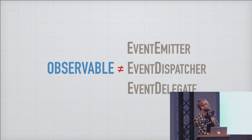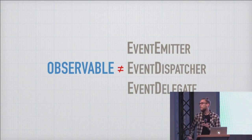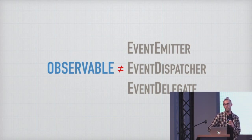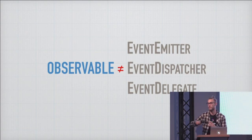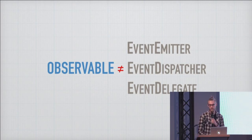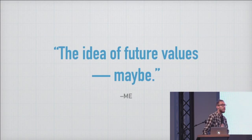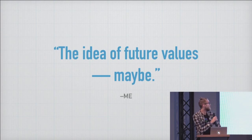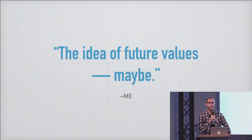That's the biggest hurdle learning Rx — we all know reactive programming, we all use event handlers and get callbacks later, but nothing is Rx. All of these guys are essentially the same thing: they're an array of callbacks. You can call a function that will iterate over the array and call all those callbacks with the same piece of data. An observable, in my words, is the idea of future values, maybe.